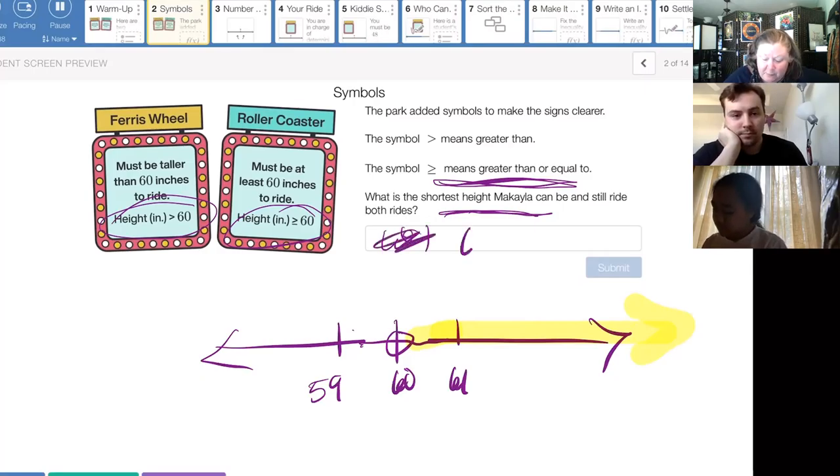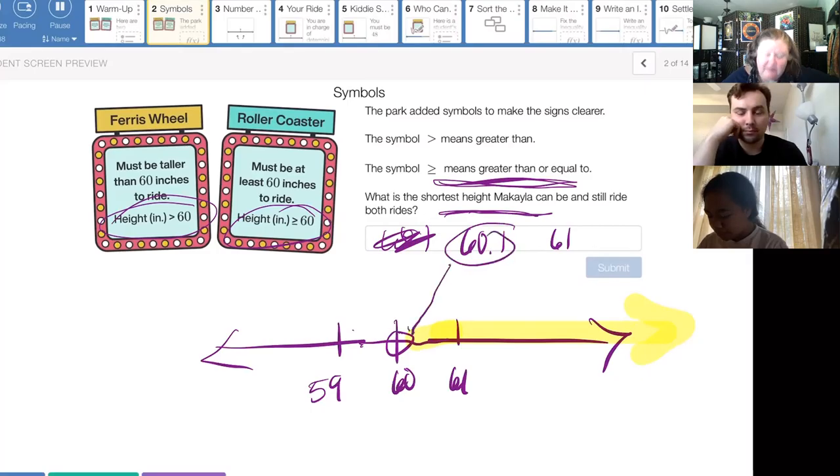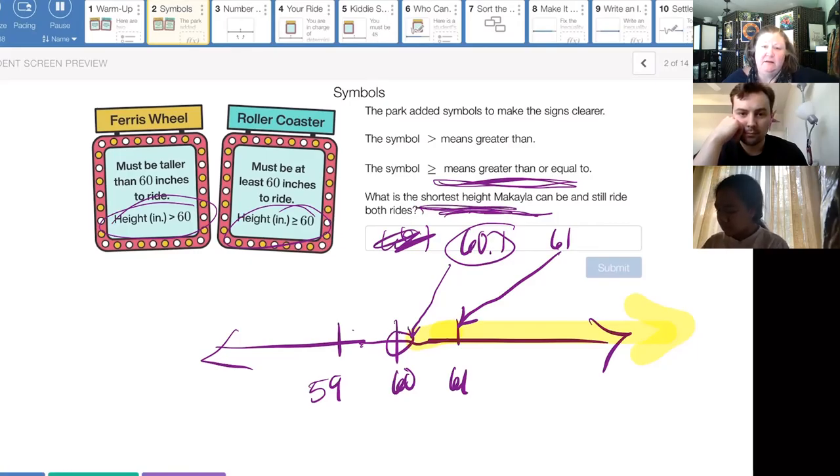I remember saying to you all on Monday that both answers were right. Both 61 and 60.1, wow, that's really poor writing, could be true numbers that are put in here. This 60.1 would just be really close to 60. And 61 would be our next largest whole number. And so these are both things that would make it true. But the absolute shortest height would be something really, really close to 60, but with a decimal.